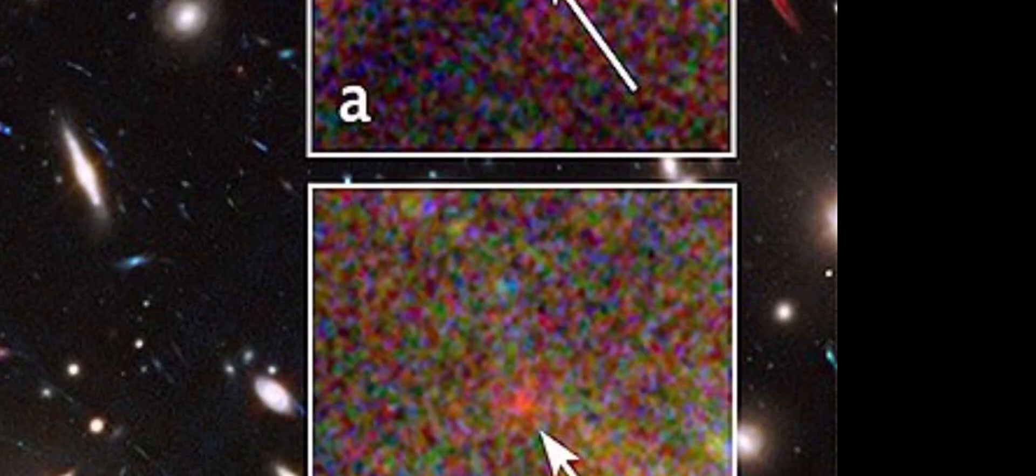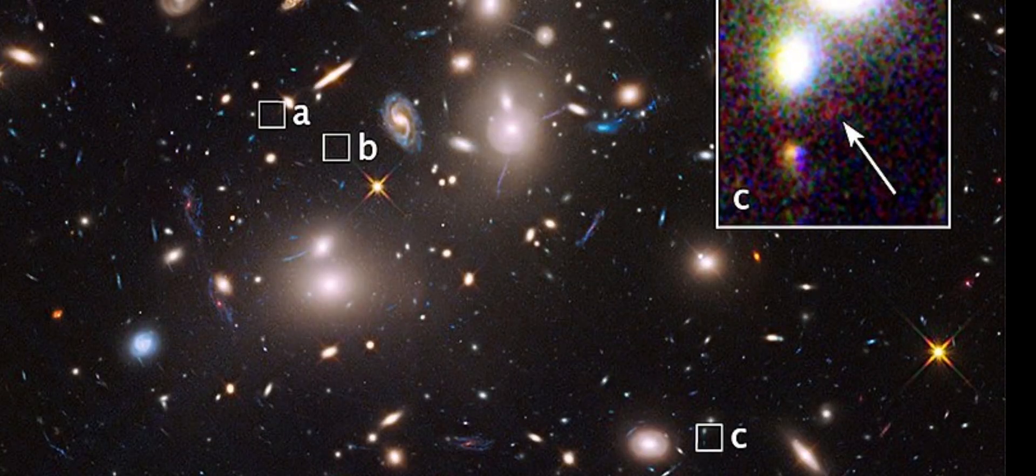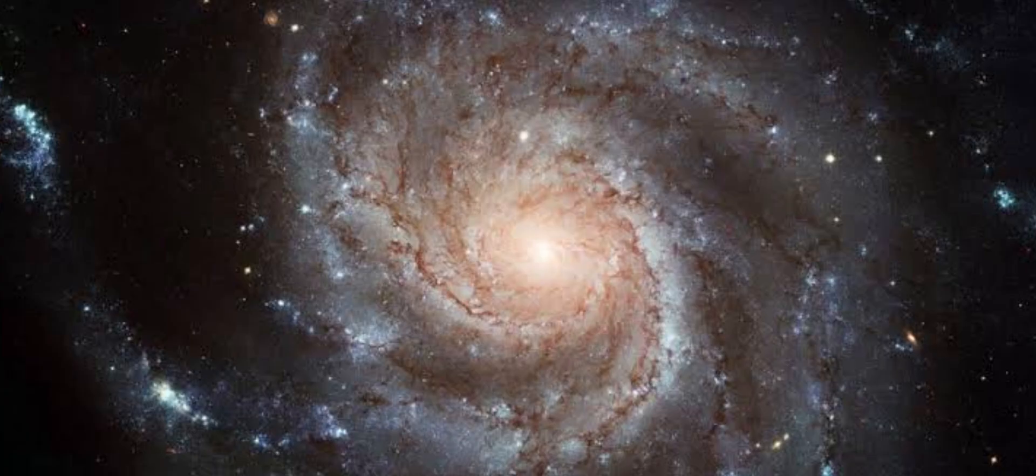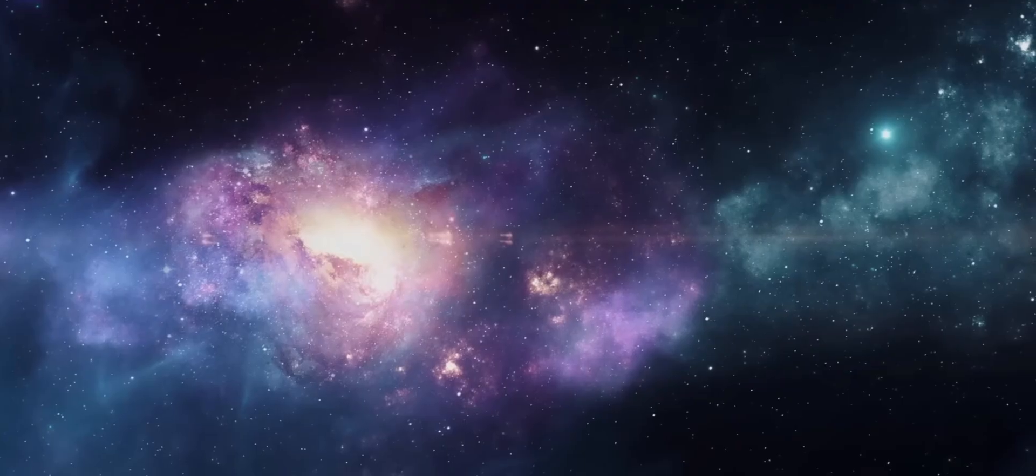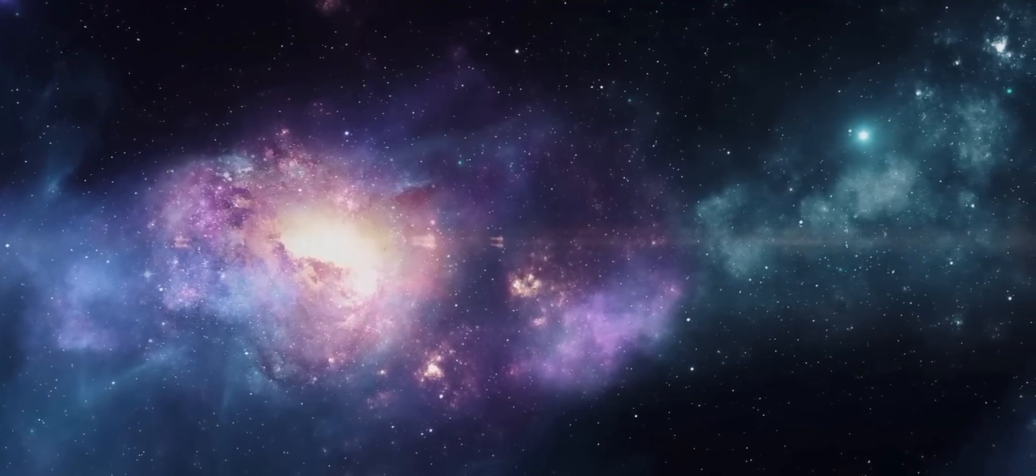Galaxies are often bound to each other gravitationally in groups that are called galaxy clusters. The Milky Way, for example, is part of the small local group that holds about two dozen galaxies, including the Andromeda Galaxy. Astronomers once thought that these structures were the biggest things out there.